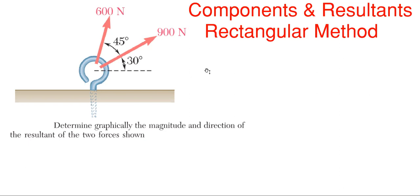We're going to be solving this problem shown here on the left, where we have a hook with 900 newtons at 30 degrees off the horizontal, and then 600 newtons at 45 degrees from the 900, and we have to determine the resultant between these two. The first thing we're going to do is draw a free body diagram and then work off of that.